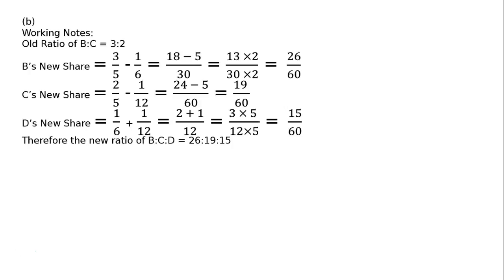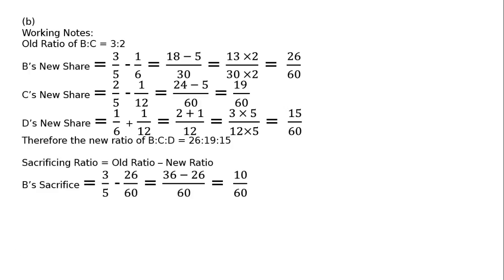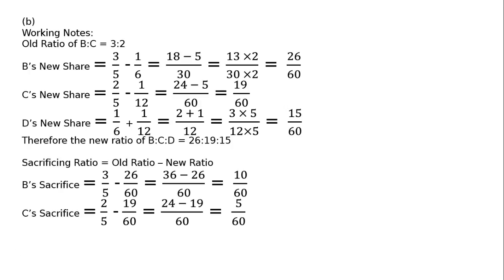The new ratio is obtained, but we require the sacrificing ratio. Sacrificing ratio equals old ratio minus new ratio. B's sacrifice: 3 upon 5 minus 26 upon 60, LCM 60, that is 36 minus 26, equal to 10 upon 60. C's sacrifice: 2 upon 5 minus 19 upon 60, equal to 5 upon 60. Therefore, the sacrificing ratio of B to C is equal to 10 to 5, which simplifies to 2 to 1.